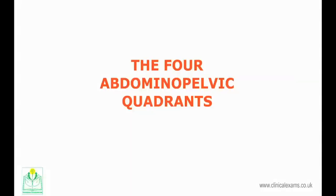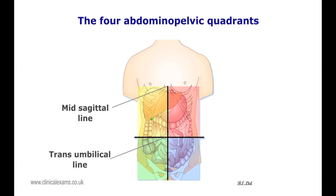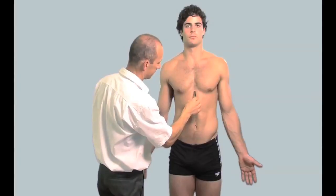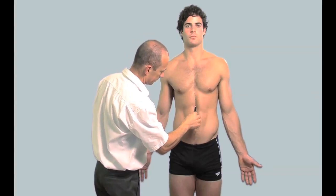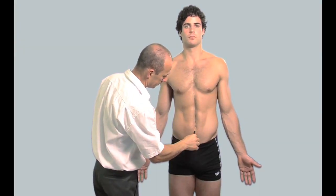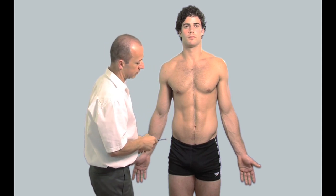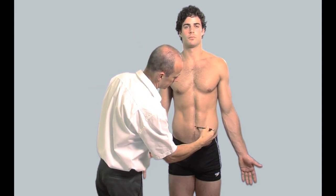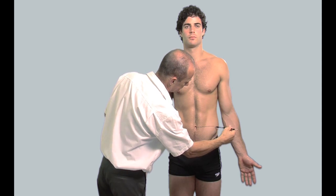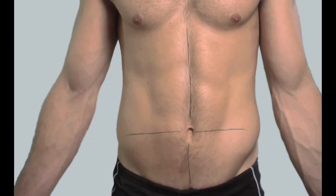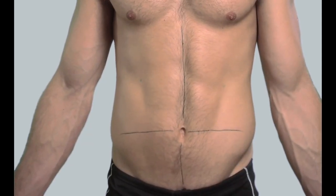The four abdominal quadrants. The abdominal cavity can be mapped out using the four-quadrant system. A mid-sagittal line is drawn from the xiphoid process through to the umbilicus and to the symphysis pubis. The transverse line is also drawn at umbilical level.